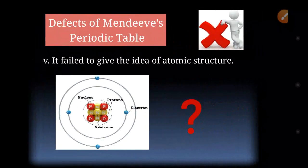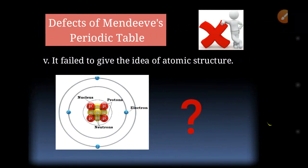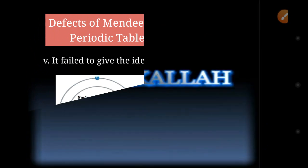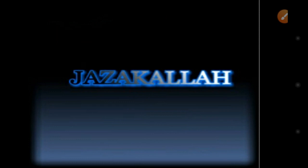The last defect of Mendeleev's periodic table was that it failed to give any idea of atomic structure. There was no information about how many electrons or neutrons are present, or what the charge of the nucleus is. No information about the structure of the atom was provided in Mendeleev's periodic table. In the next lecture, we will study the modern periodic law. Thank you.